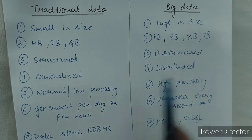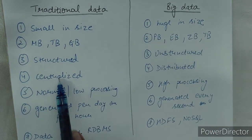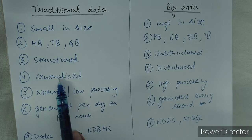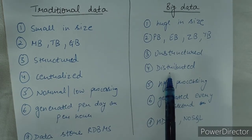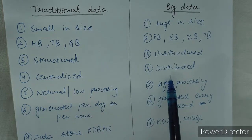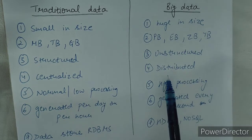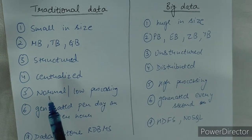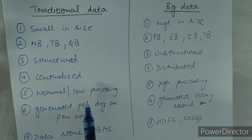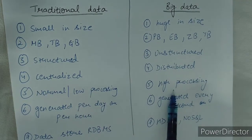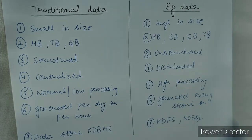Traditional data is centralized — for example, one main server handles everything. Whereas big data is distributed; you can say fully distributed, with a massive parallelism concept — that is a topic I will teach in further videos. Traditional data requires normal to low processing, but big data requires high processing.